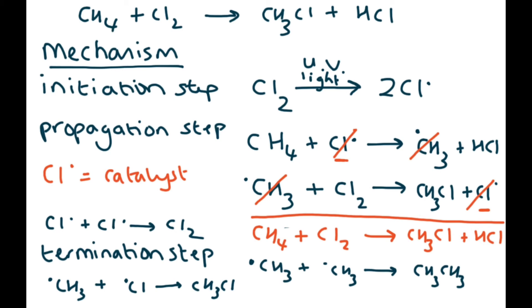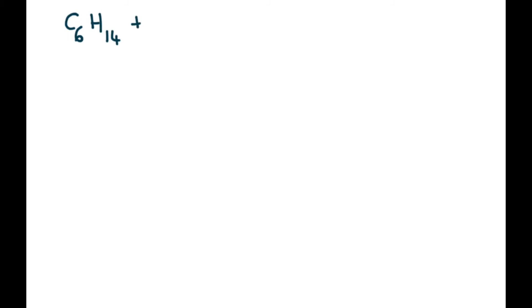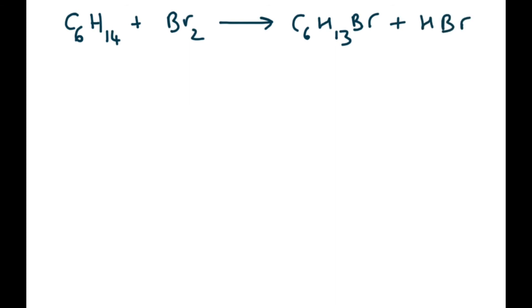Let's try a more complicated example — hexane reacting with bromine. In this reaction, one hydrogen is replaced with a bromine, and the other product is HBr. Let's go through the mechanism: initiation is the first step — you could pause the video and try it yourself, then check your answer.